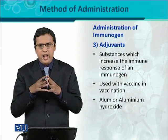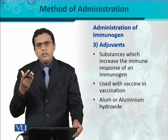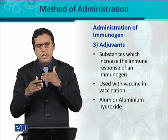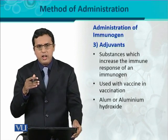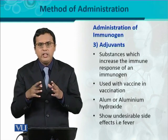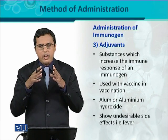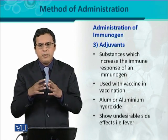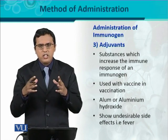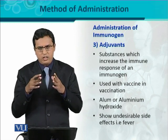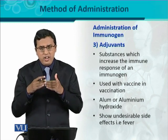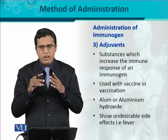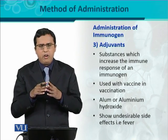Various adjuvants are used in vaccination. For example, alum or aluminium hydroxide is used as an adjuvant. Aluminium hydroxide serves as an adjuvant to increase immunogenicity, but it also creates some undesirable effects — like nausea, sometimes fever, and rash at the injection site. All these are undesirable effects and can sometimes be harmful to the host. So adjuvants are substances or molecules which increase the immunogenicity of the immunogen, and this is one of the important factors in determining the method of administration.